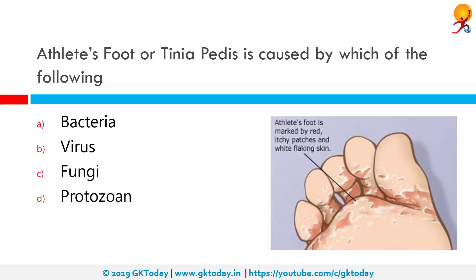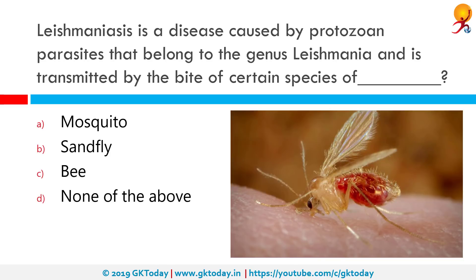Athlete's foot, or tinea pedis, is caused by fungi. Athlete's foot, known medically as tinea pedis, is a common skin infection of the feet caused by fungus. Signs and symptoms often include itching, scaling, cracking, and redness. It's called athlete's foot because athletes often get it.